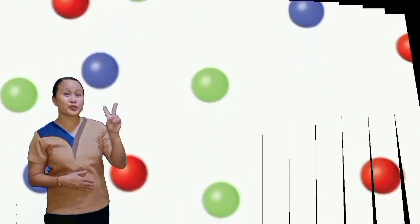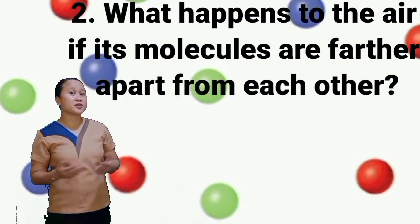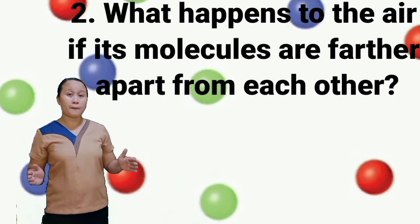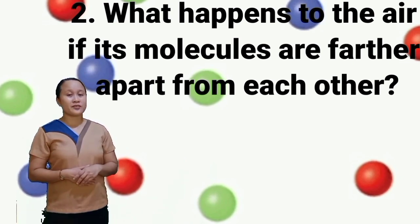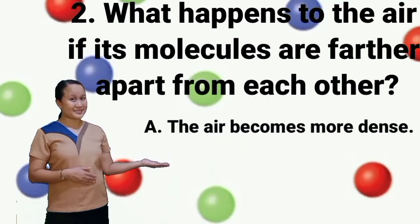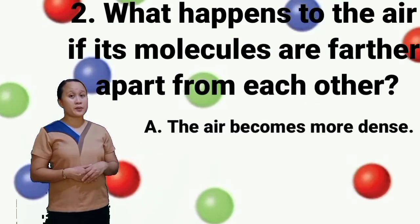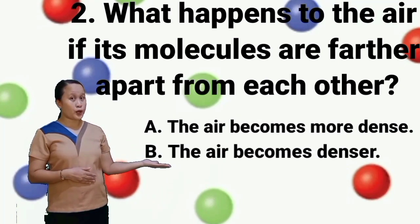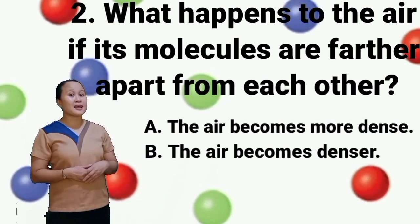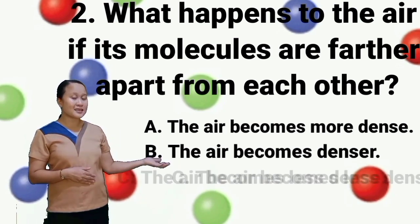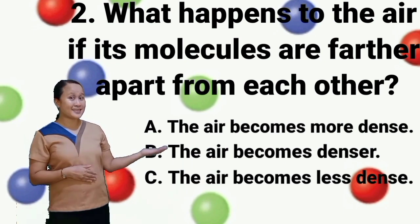Question number two: what happens to the air if its molecules are farther apart from each other? Letter A: the air becomes more dense. Letter B: the air becomes denser. Letter C: the air becomes less dense. Letter D: the air becomes densest.